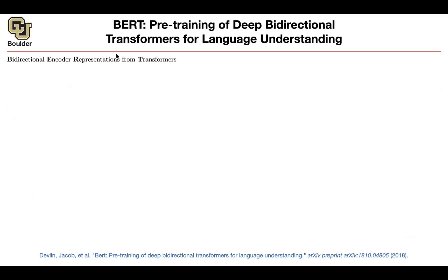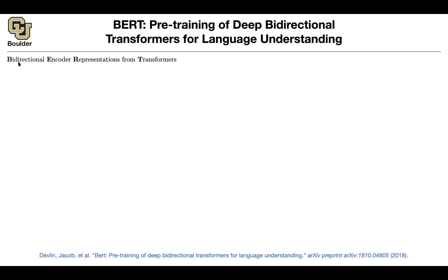First of all, what does BERT stand for? It stands for Bidirectional Encoder Representations from Transformers. It's the same paradigm of pre-training and fine-tuning — you first pre-train, and then you fine-tune on your target task. But now you're changing your loss function compared to before.